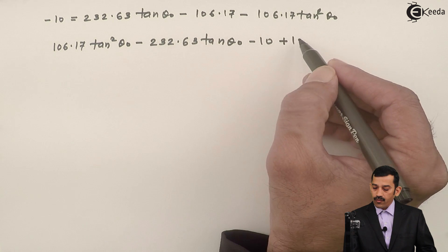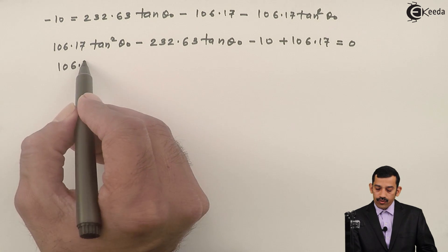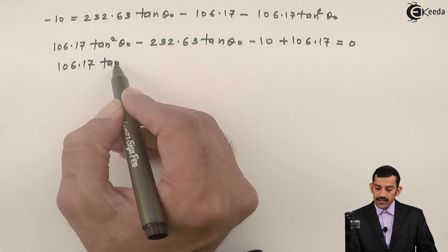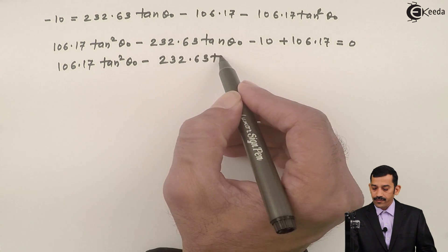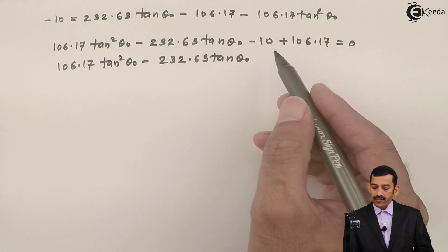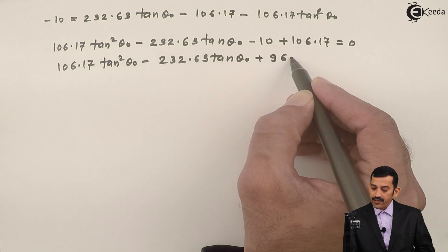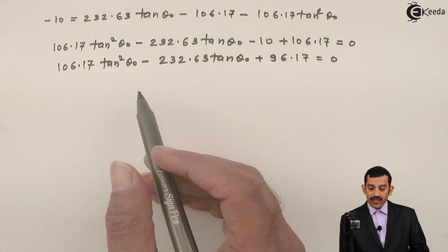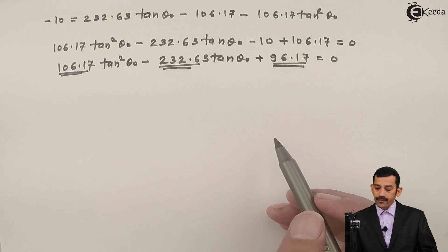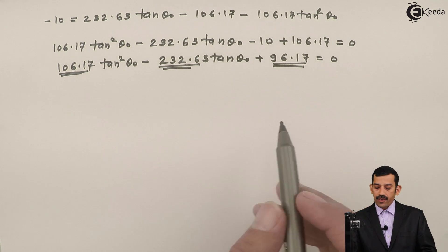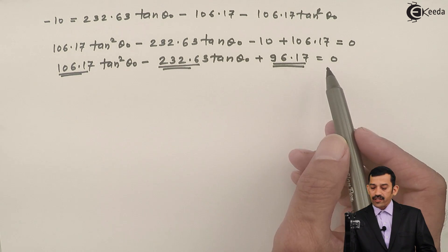Forming the quadratic equation: 106.17·tan²(θ₀) − 232.63·tan(θ₀) + (−10 + 106.17) = 0, which simplifies to 106.17·tan²(θ₀) − 232.63·tan(θ₀) + 96.17 = 0. Here A = 106.17, B = −232.63, and C = 96.17. We substitute these into the quadratic formula.